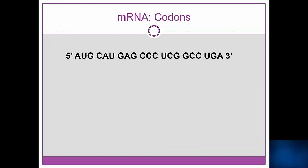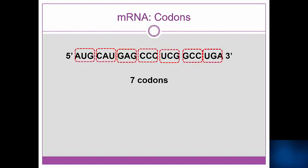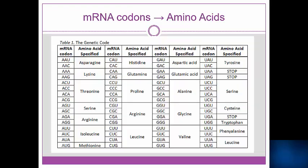Now, let's examine our mRNA transcript again. How many codons are there? Yes, seven — these seven right here. If we go to our genetic code table, we can match up each codon and figure out which amino acids will occur in our protein: first methionine, then histidine, glutamic acid, proline, serine, alanine, and then we reach a stop codon.